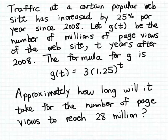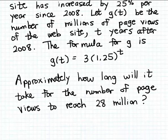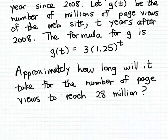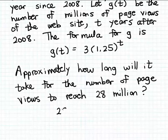Since the number of millions of page views is the output from this exponential function G, we can answer this question by solving the following equation. We substitute 28 for the output, giving us: 28 = 3 times 1.25 to the T power.